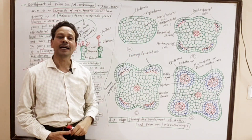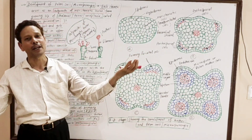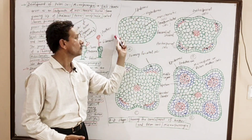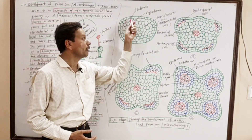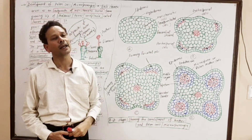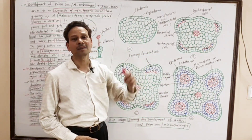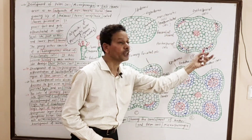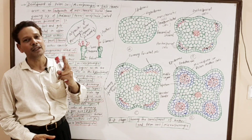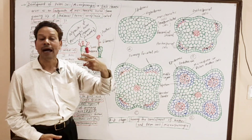This is the young anther. Note on this young anther: it is a mass of meristematic tissue. This young anther is surrounded by an epidermis. Just below this epidermis is the hypodermis, and this entire central mass consists of meristematic cells. Soon, this young anther gets differentiated into a bilobed structure. Each anther is generally bilobed — the condition is bithecous.